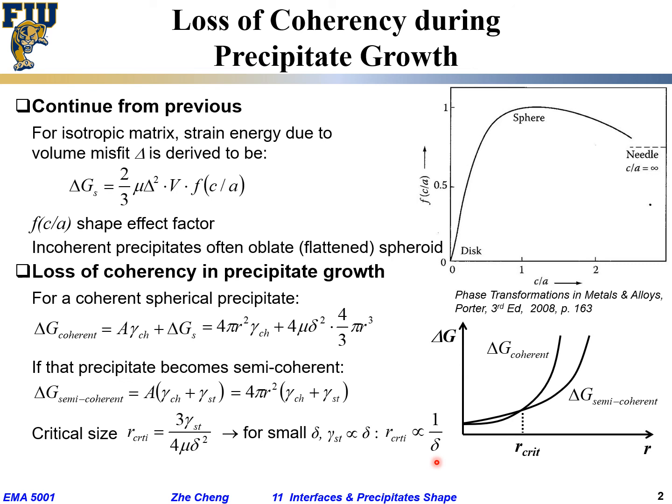What that means is: the larger the misfit, the smaller that transition radius will be. The smaller the misfit means the larger the transition radius. The perfect fitting case would be when delta goes to zero, which means the precipitate and the host can have a perfect match and grow very large while remaining coherent. When the precipitate is smaller than this critical transition radius, it remains coherent — trying to match at the interface bond by bond. When it's larger than this, it becomes too much to match bond by bond, and it will become semi-coherent.